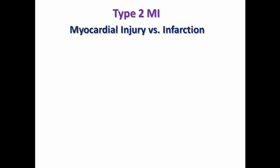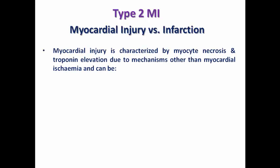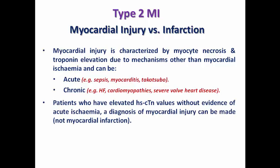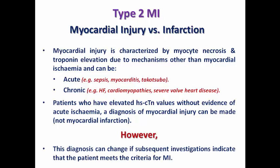It is important to distinguish myocardial injury from myocardial infarction. Myocardial injury involves myocyte necrosis and troponin elevation due to mechanisms other than ischemia. It can be acute — with detectable rise or fall in troponins as in sepsis, myocarditis, or Takotsubo cardiomyopathy — or chronic with static troponin as in heart failure, cardiomyopathy, or severe valvular disease. Without evidence of ischemia such as symptoms, ECG changes, or segmental motion abnormality, it remains myocardial injury, not infarction. However, if subsequent investigations show ischemia, the diagnosis may change to MI per the fourth universal definition.